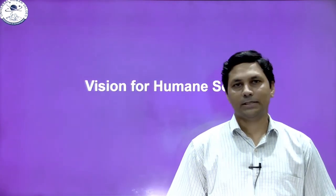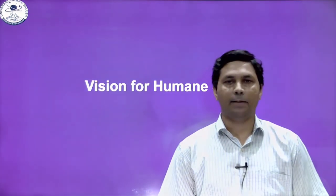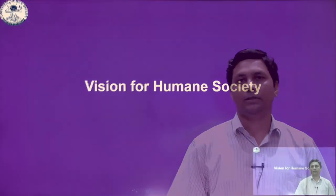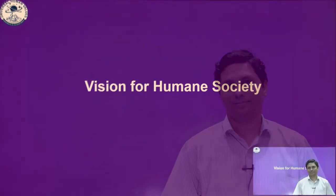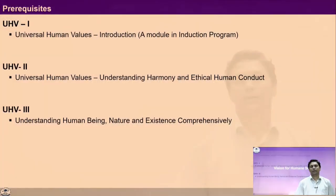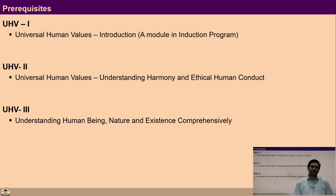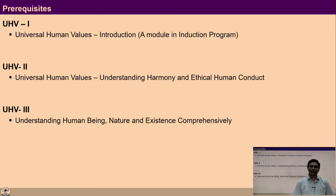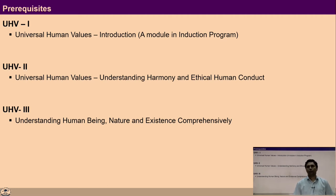I am course coordinator of this course Vision for Humane Society. In the next few minutes I am going to describe about the course. The course is also known as UHV-4 and as the name suggests, I assume you must have gone through UHV-1, UHV-2 and UHV-3 before enrolling in this course UHV-4.